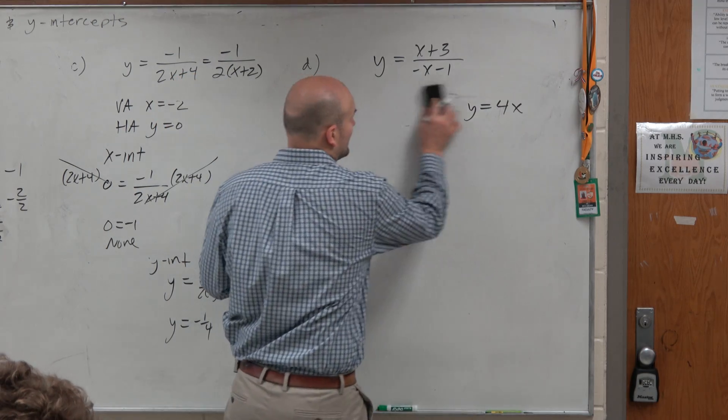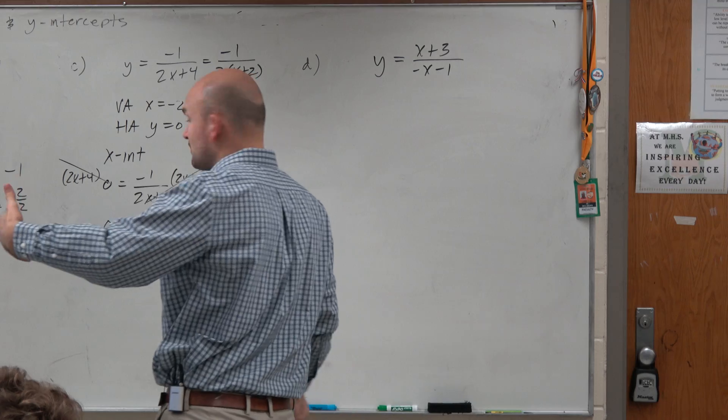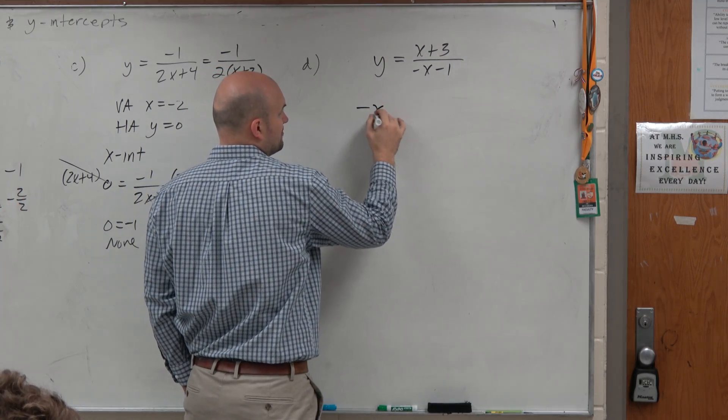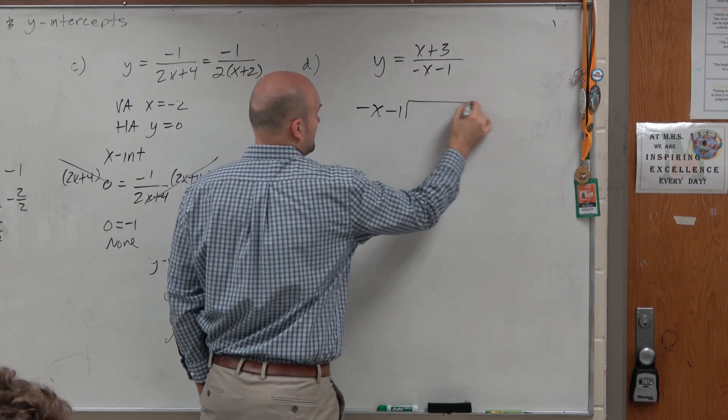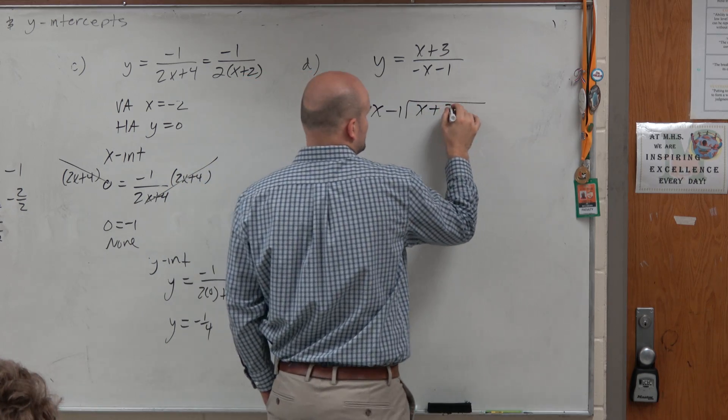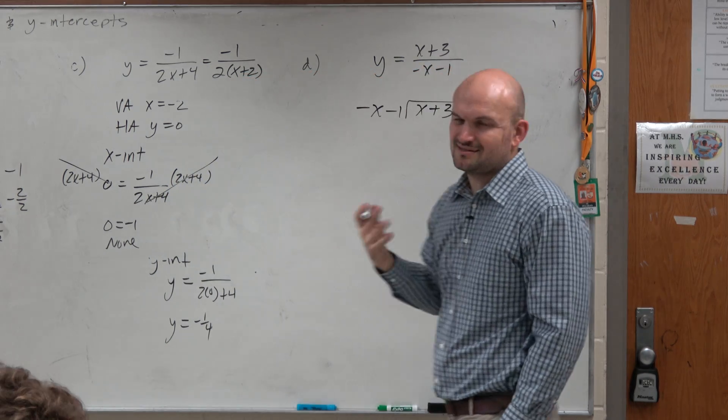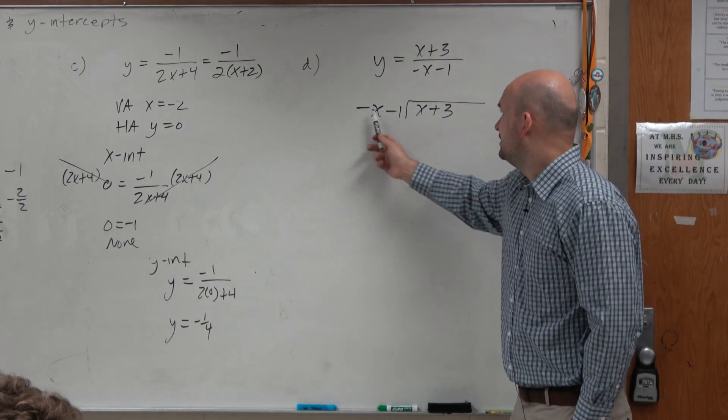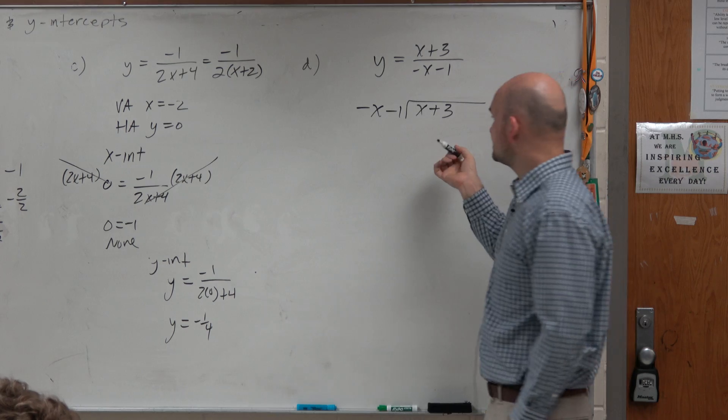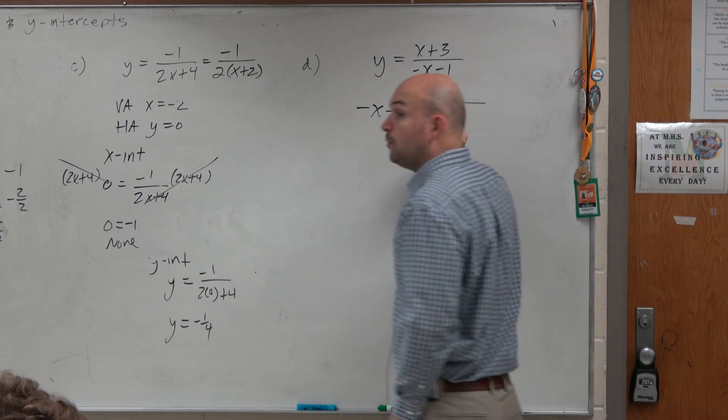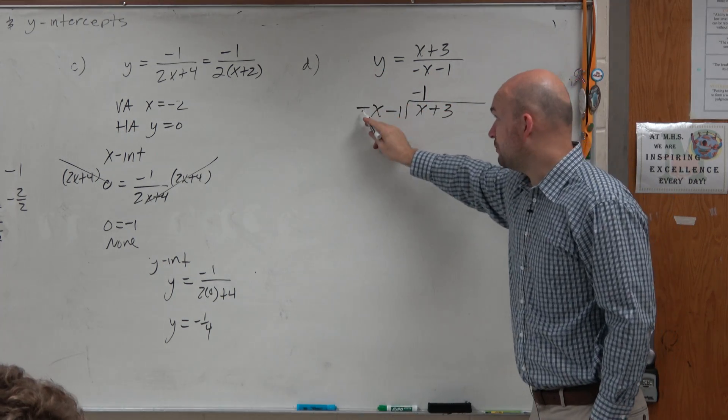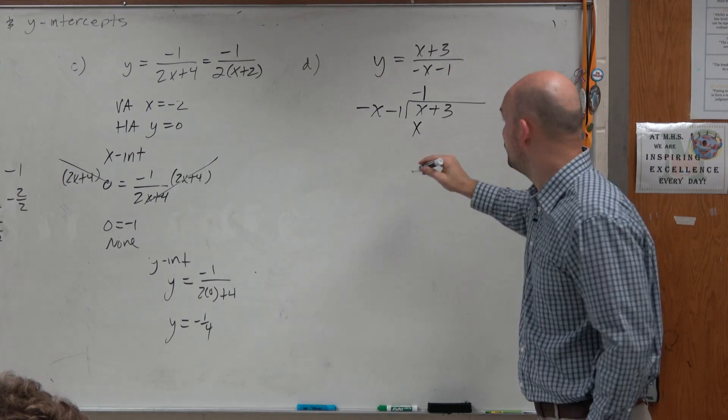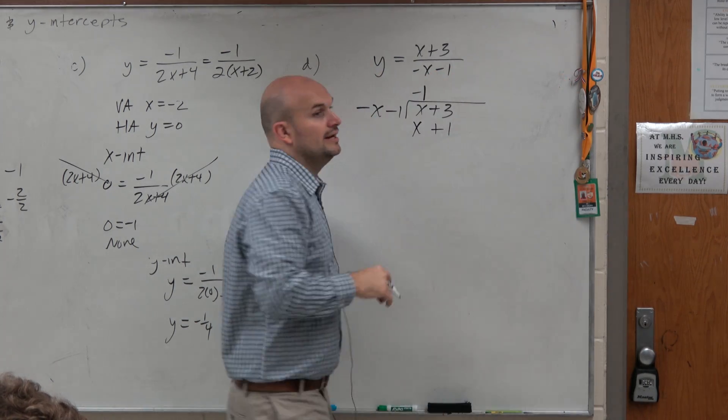So let's go ahead and graph this and see if we can recognize what the graph looks like. So by dividing, I'm going to have to use long division. You technically could use synthetic division, but I just would say it's easier just to work with the long division. It's not that many steps. Negative x divides into x negative 1 time. Because negative 1 times negative x is a positive x.